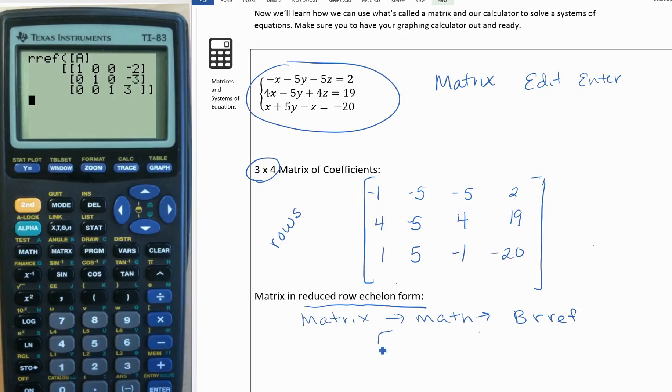That gives us our reduced row form: 1, 0, 0, negative 2; 0, 1, 0, negative 3; 0, 0, 1, 3.